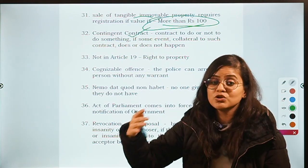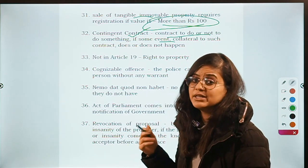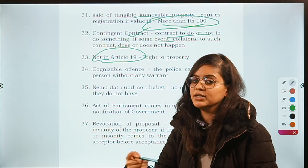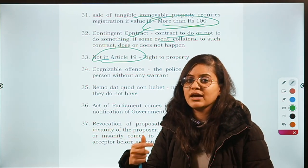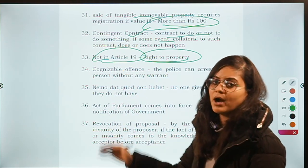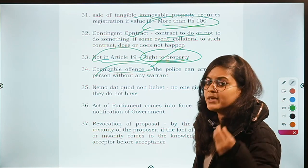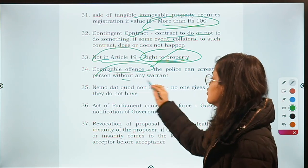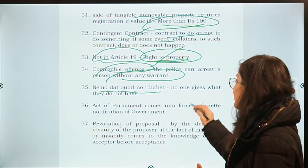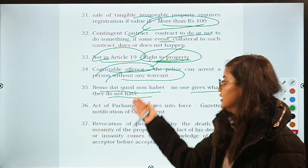There was one more question on contingent contract — a contingent contract means a contract to do something or not do something if the event collateral to it does or does not happen. Then a negative question: which of the following freedoms is not a part of Article 19? Options included speech, expression, and right to form associations. The answer was right to property — it is not a part of Article 19 as it has been removed through amendment. Also: cognizable offenses are those where the police can arrest without any warrant. The maxim 'Nemo dat quod non habet' means no one can give what he does not have — if a person does not have good title to property, he cannot pass on that title.